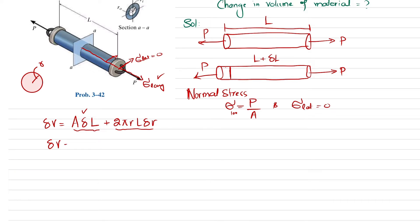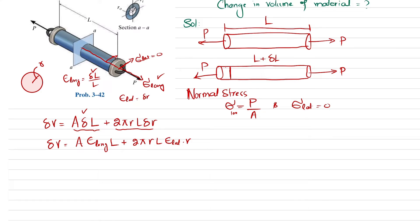We know that longitudinal strain equals change in length divided by original length, so delta-L equals longitudinal strain times L. Similarly, delta-r equals lateral strain times r, because lateral strain is change in radius divided by original radius.